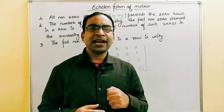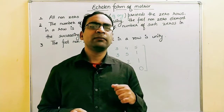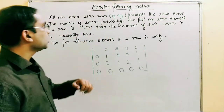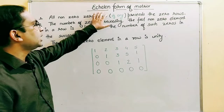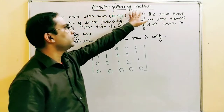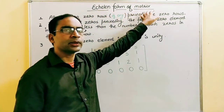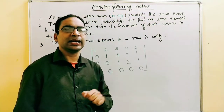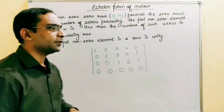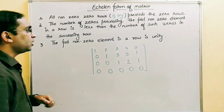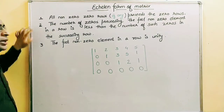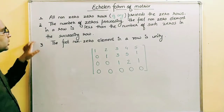Let's study echelon form of a matrix today. So what is the echelon form of a matrix? A matrix is said to be in echelon form if it satisfies the following three conditions.